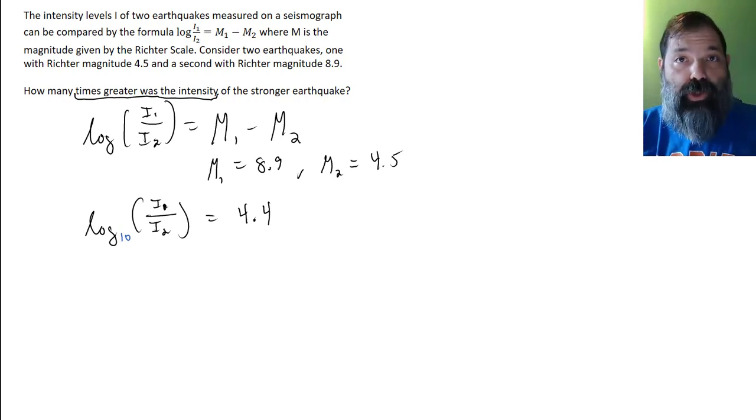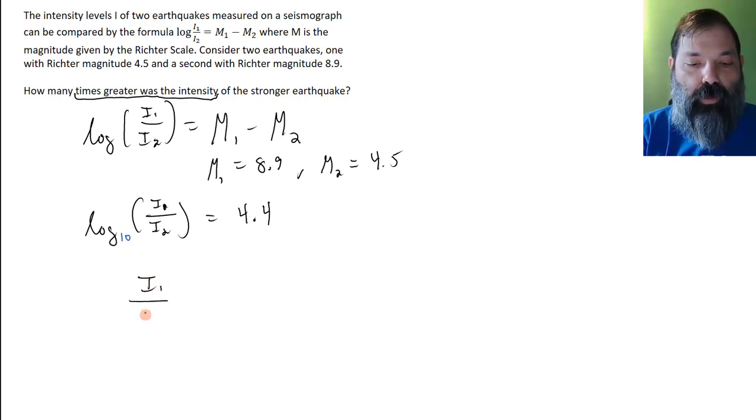Converting this equation to its exponential form, then i sub 1 over i sub 2 is 10 to the 4.4 power.